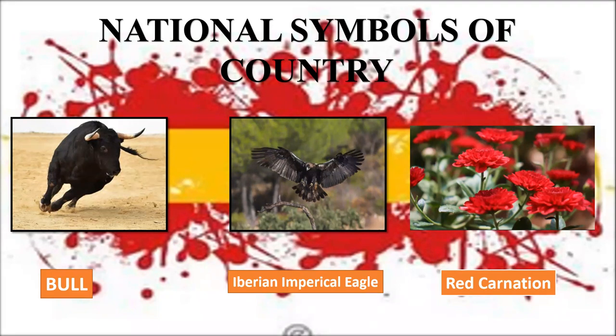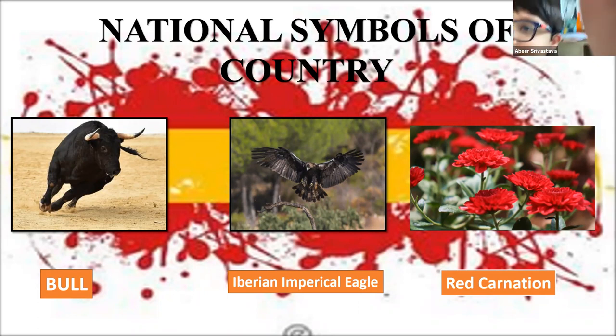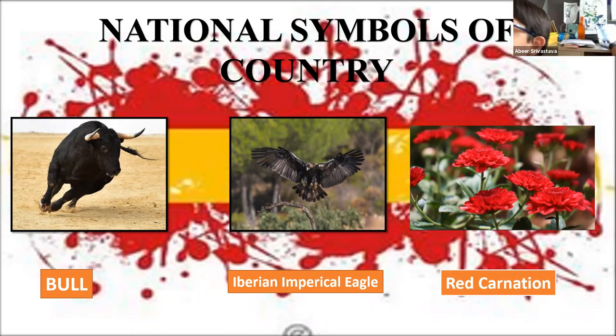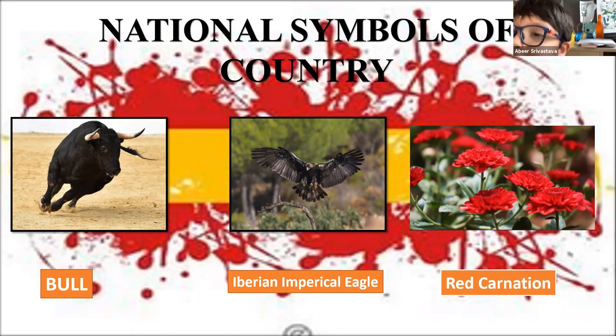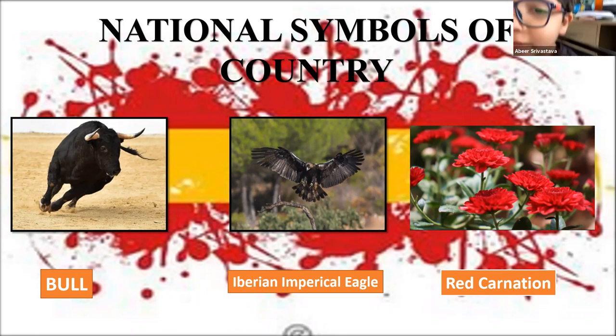The red carnation is the symbol of love. Abhi commented that they couldn't think of any other animal to make the national animal, so they chose the bull — like many countries do.